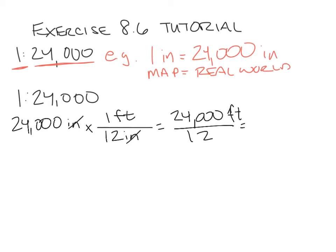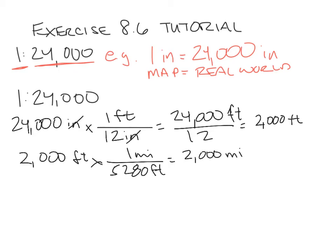12 into 24,000 is going to be 2,000 feet. And I'm going to convert again, 2,000 feet into miles. There are 5,280 feet per mile. That gives me 2,000 over 5,280, feet canceling out. I divide that out, that's going to be approximately 0.38 miles.